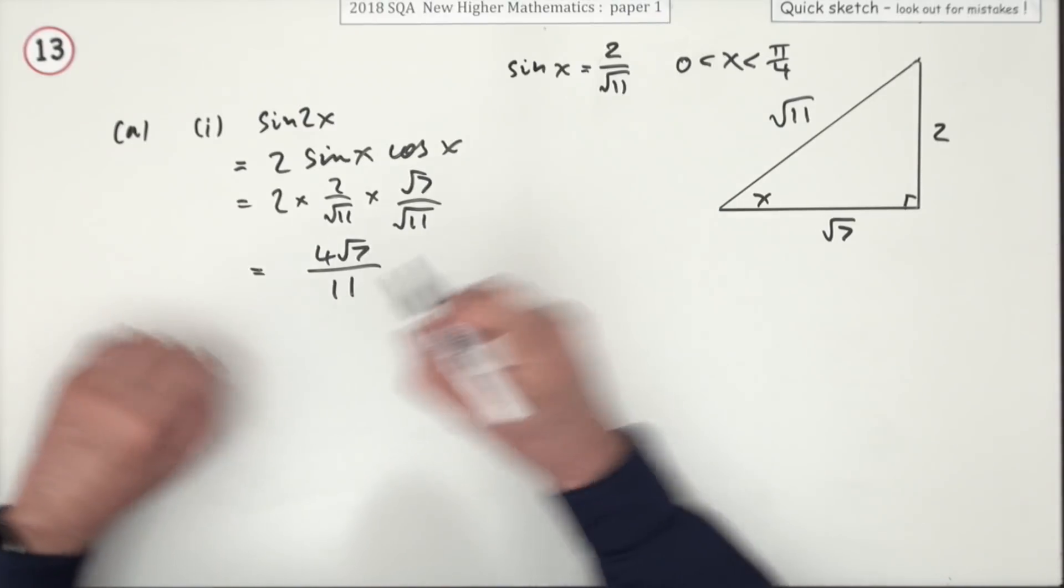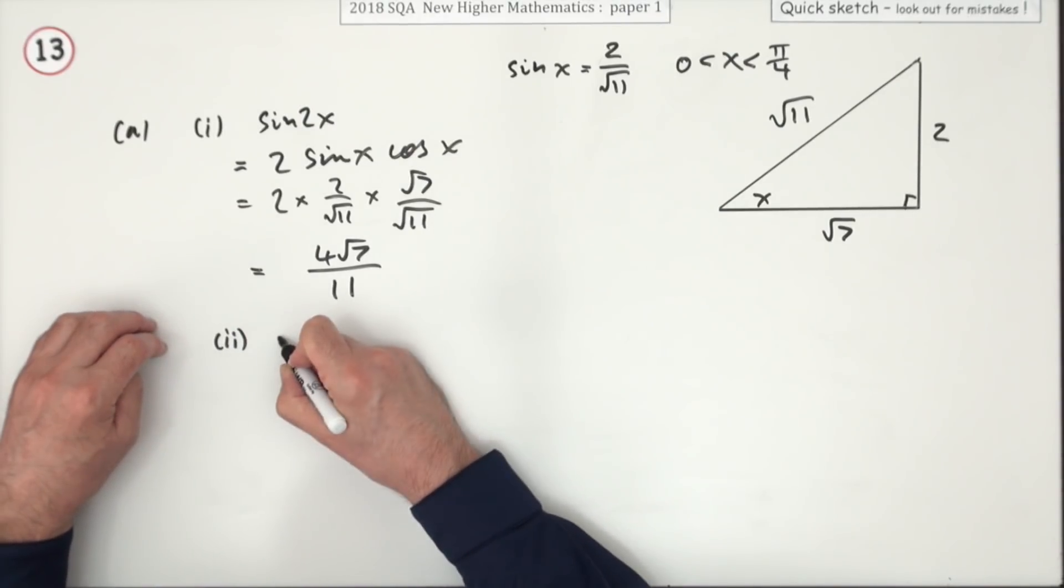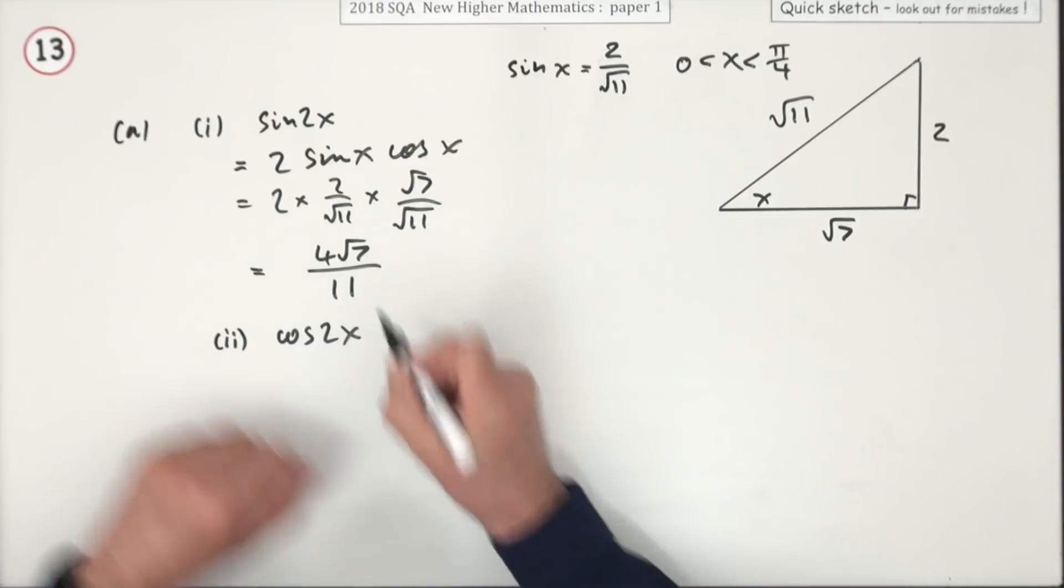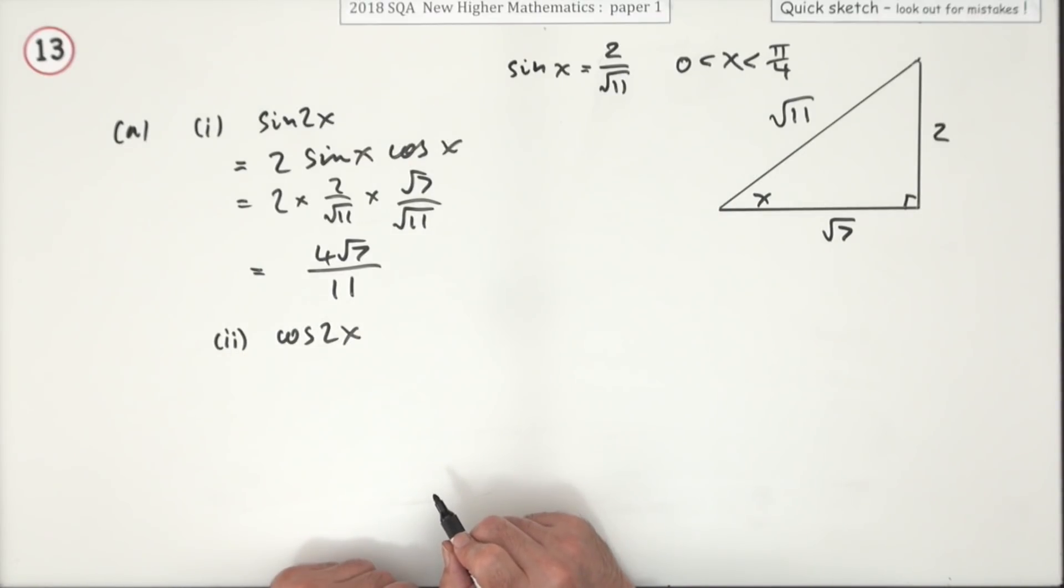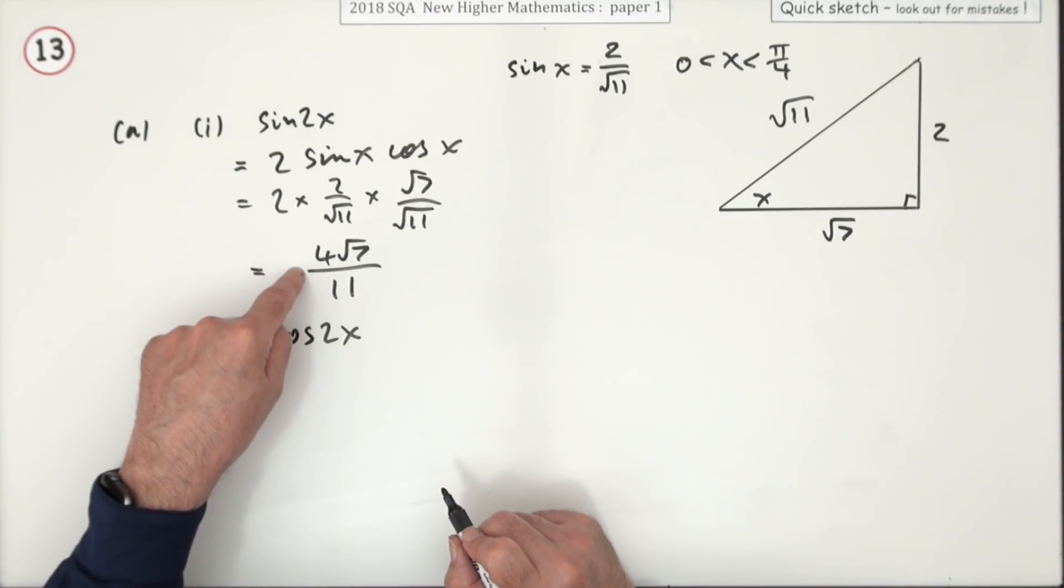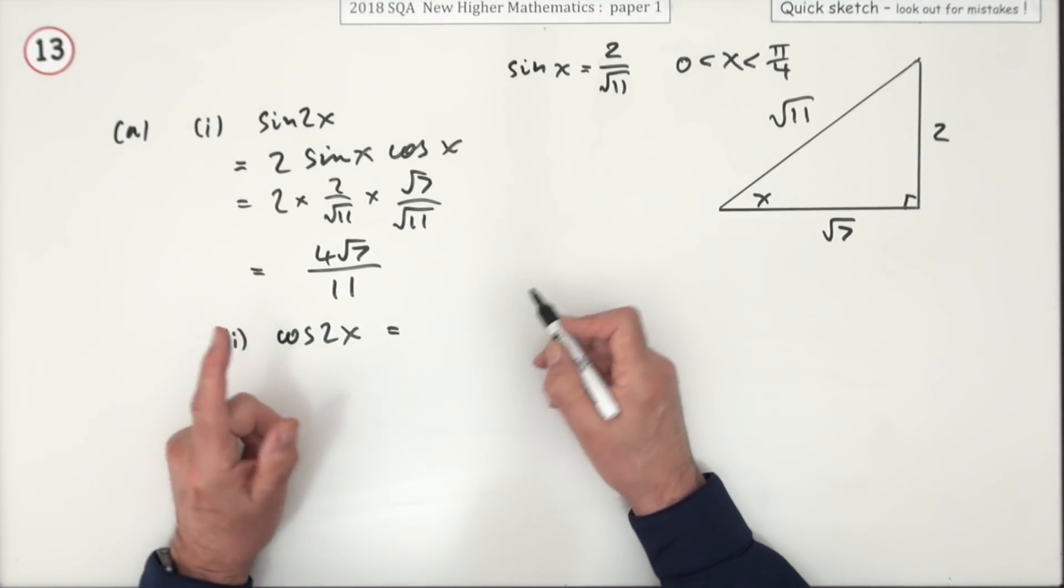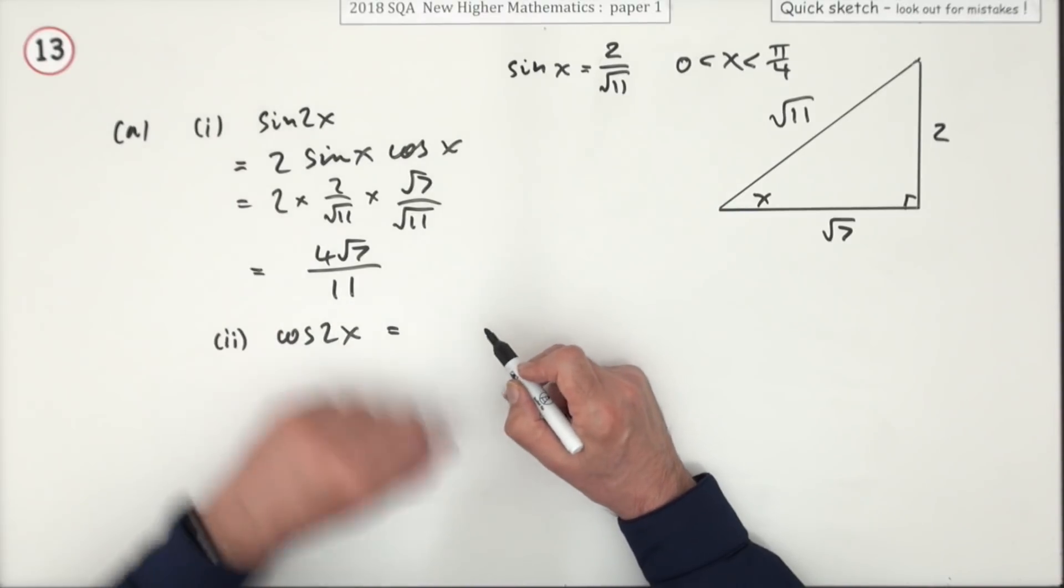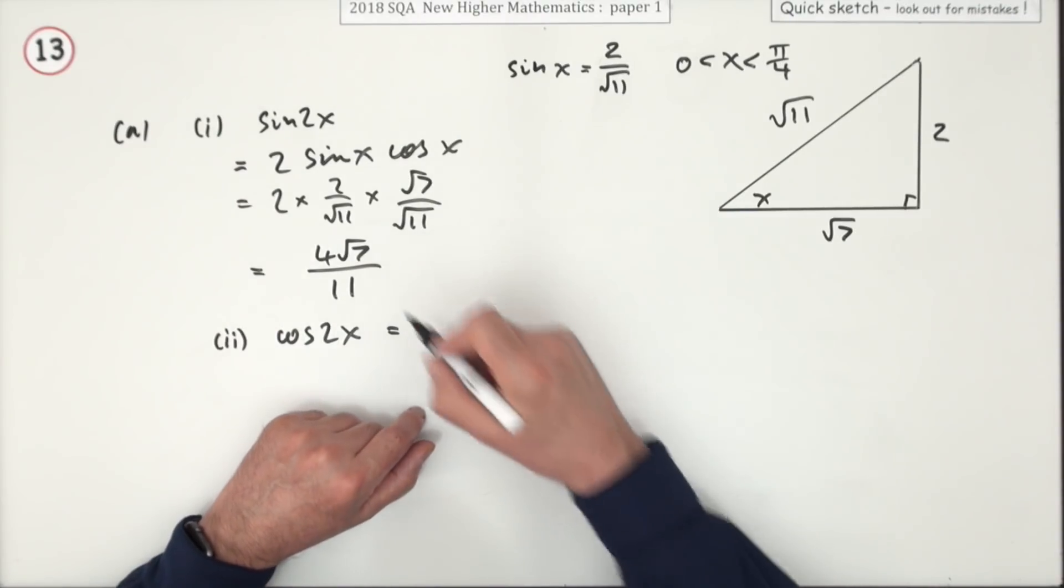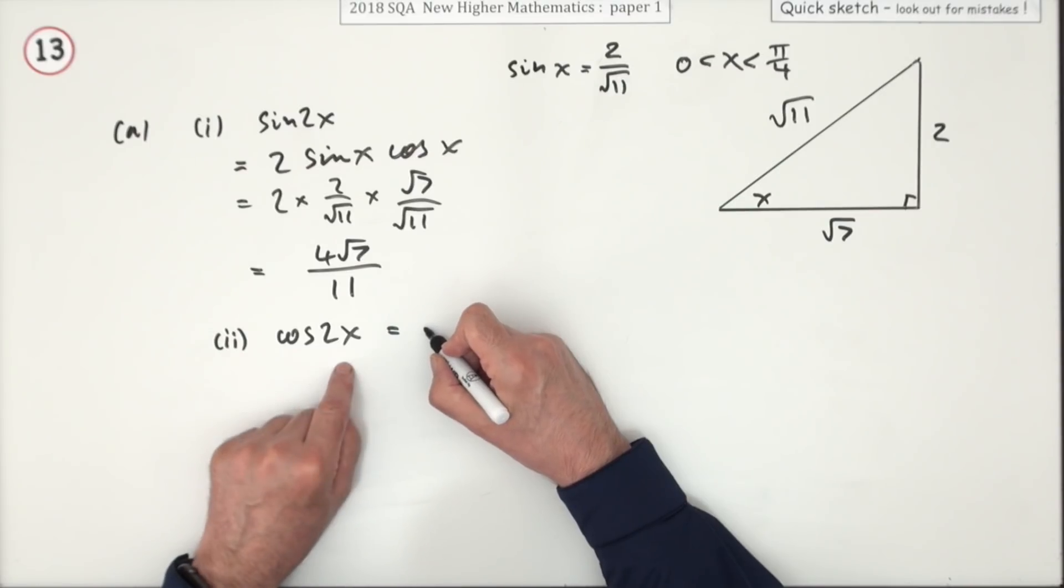There's the first part. Then it wants the cos of 2x. Well, you could draw the triangle for sine 2x, the 2x triangle rather, but as well just go in with another formula. You could also say the square root of 1 minus the sine squared.